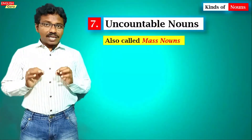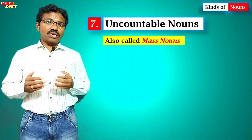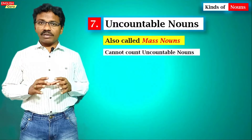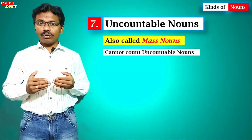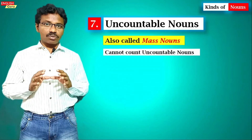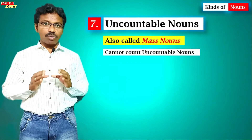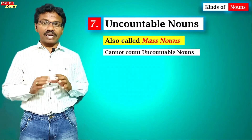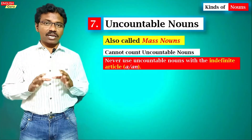The seventh one is uncountable nouns. They are also called mass nouns. Whatever nouns that we cannot count — like one, two, three — they are called uncountable nouns. So uncountable nouns cannot be counted.